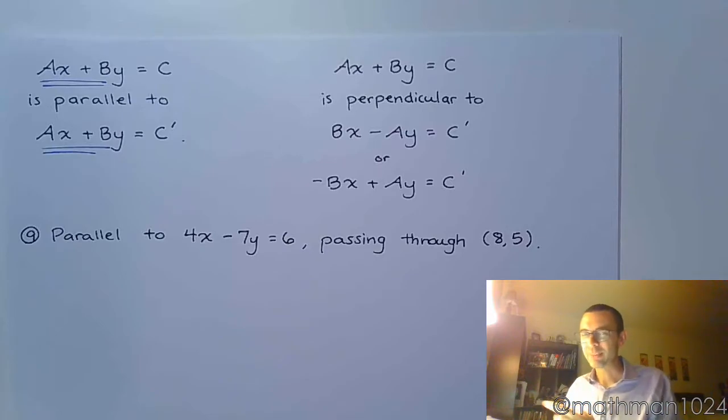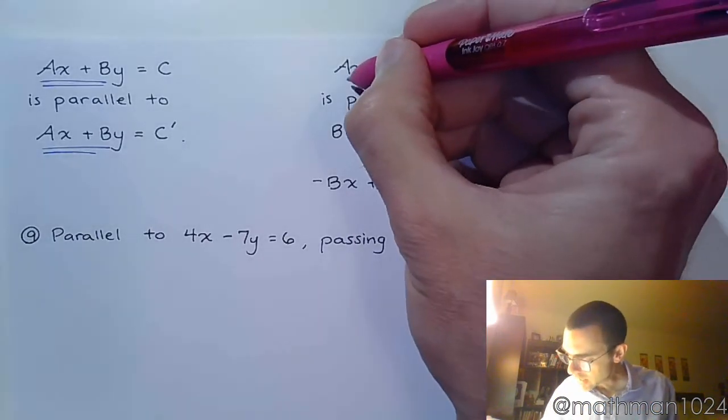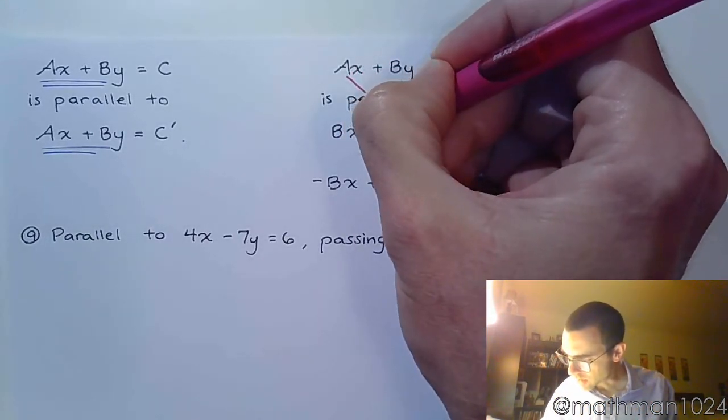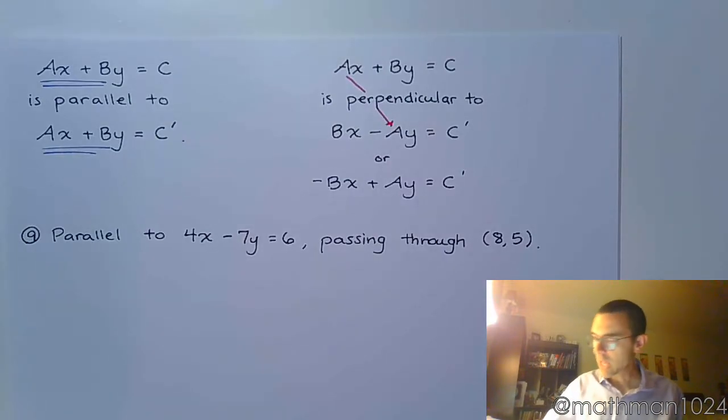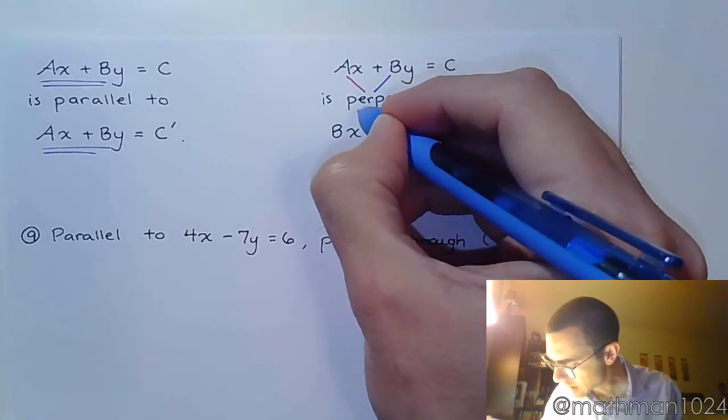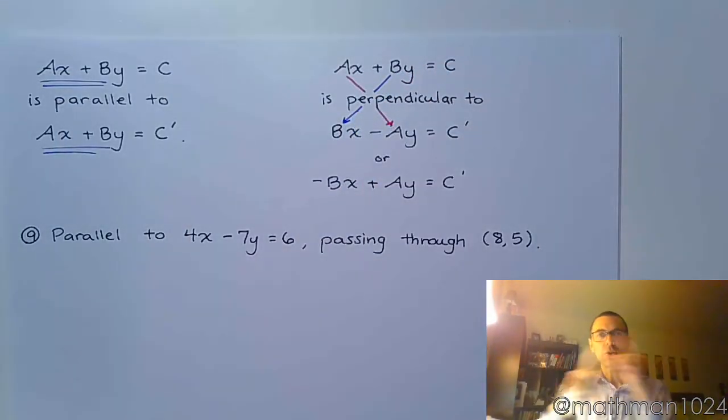Now when it comes to perpendicular, that's where it gets a little bit trickier. For perpendicular lines, they have negative reciprocals for slopes. So to get their slopes to be reciprocals, you take these coefficients here for x and for y, and you crisscross them.